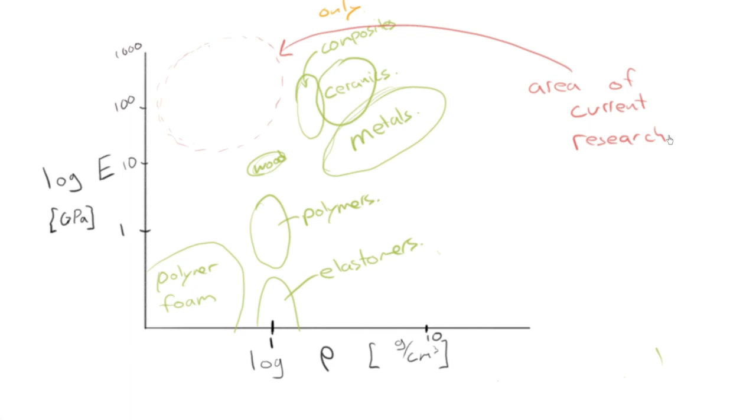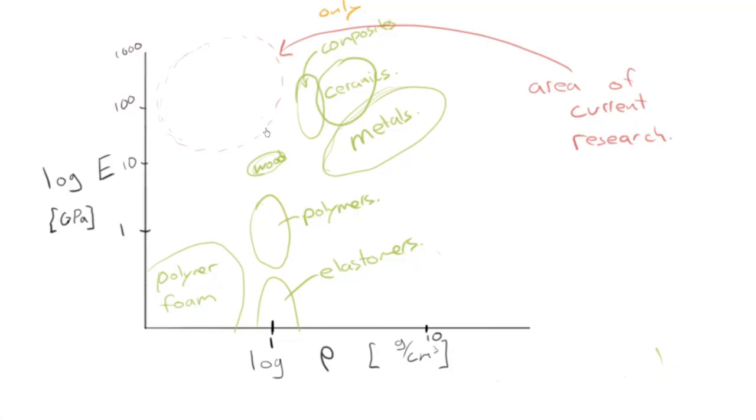You know, I mean even things like sporting goods. We're trying to move more and more towards that high stiffness, low modulus area. High modulus, low density, sorry. Right, so that's a quick look. Next video, we're going to look at an example of selecting from these different material classes based on the modulus and the density. Okay, thank you.